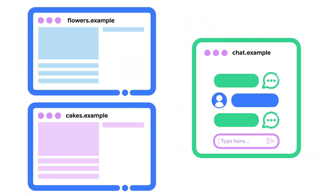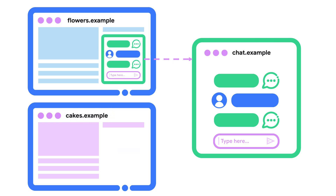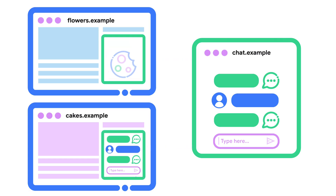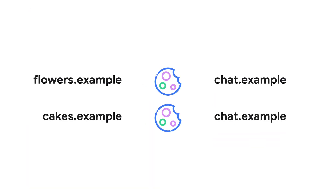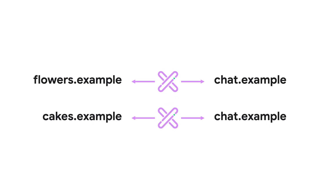In some cases, sites rely on third-party embeds even though the user identity doesn't need to be shared across sites. Consider a support chatbot widget chat.example embedded on different sites, say flowers.example and cakes.example. The chat widget stores the user ID in a cookie to allow the widget to re-identify the user and re-assume a support case on sites where it is embedded. With third-party cookies blocked, chat.example won't be able to set a third-party cookie when embedded as a widget, and the support flow might be disrupted.